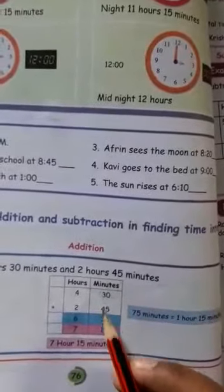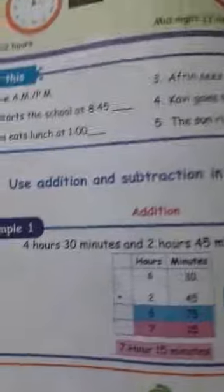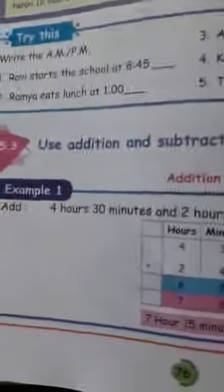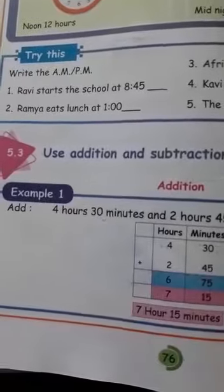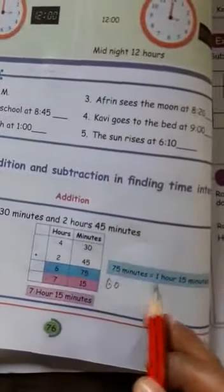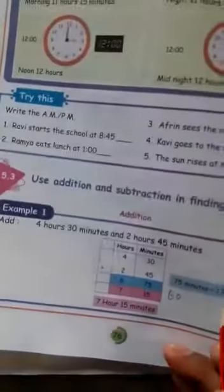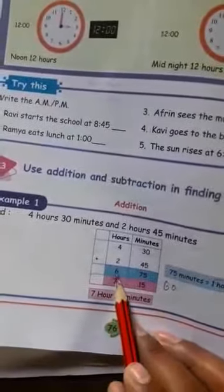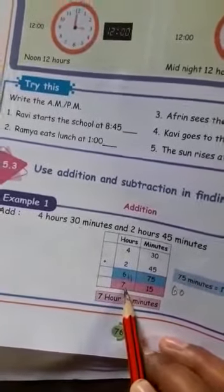0 plus 5 is 5, 3 plus 4 is 7, and 4 plus 2 is 6. So we get 6 hours 75 minutes. We already know 1 hour equals 60 minutes. So 75 minutes is split into 1 hour 15 minutes. Therefore 6 plus 1 equals 7 hours.